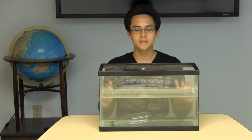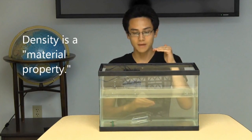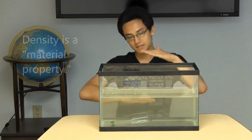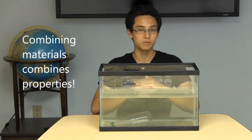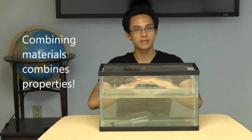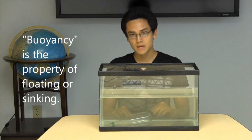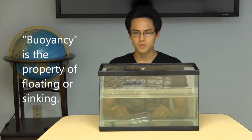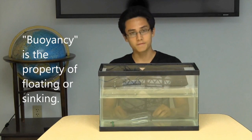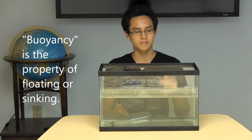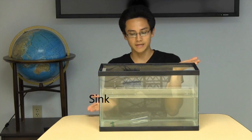As you can see, some materials float and others sink. By combining different materials, engineers can design vehicles like boats or submarines that float or sink as they want. There are two basic ways of controlling buoyancy. The first is by controlling the balance of materials that float with those that sink.